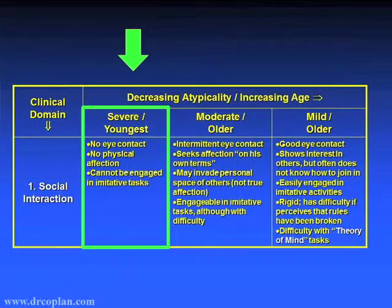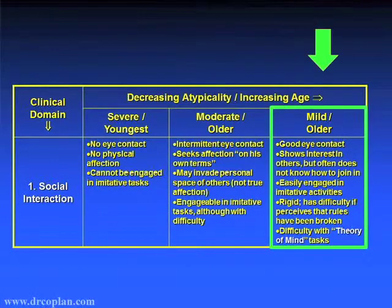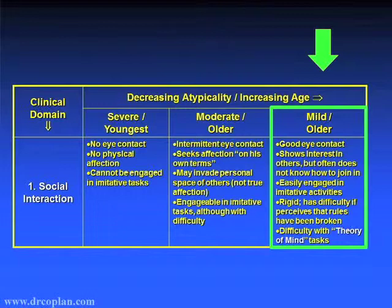Over here we have individuals who want to be part of the mix — they want to engage, but they don't know how. They may come up and start with a formulaic utterance: 'Hi, my name is Jamie. I like trains.' And when the other child answers, they don't know what to do next. They've learned a little script but can't improvise. Good eye contact, shows interest in others, often doesn't know how to join in, easily engaged in imitative activities but rigid, and has difficulty when rules seem broken, and difficulty with theory of mind tasks.